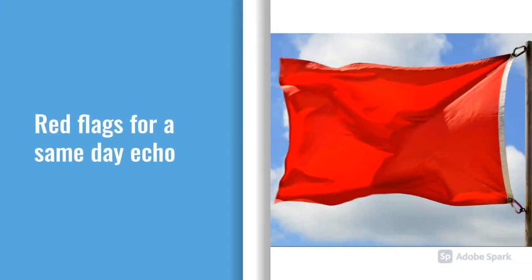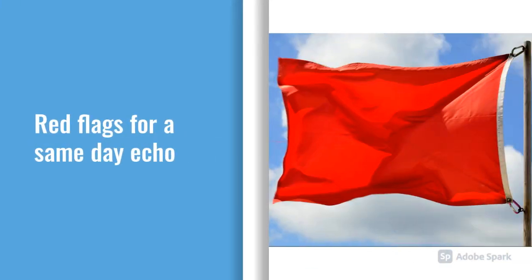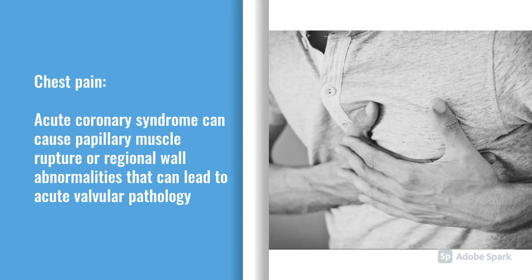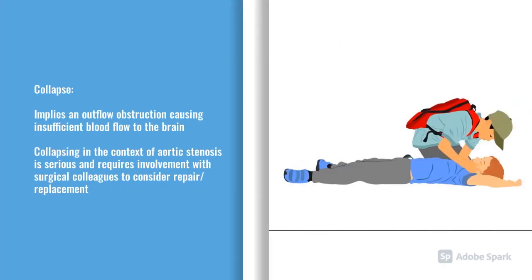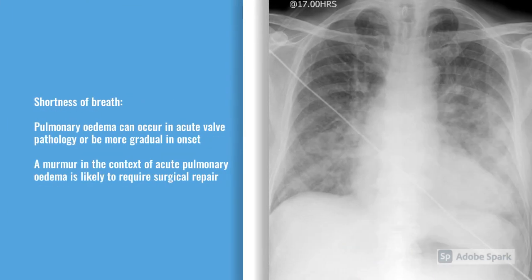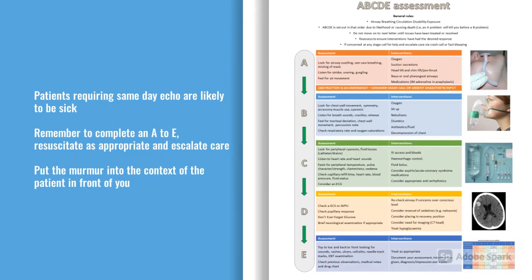Red flag criteria for a same-day echo include: chest pain in the context of a murmur — you have to think whether a large ischaemic event has caused a valvular prolapse or regurgitant valve. Collapse is always concerning, particularly aortic stenosis — if a patient is having collapses, especially on exertion, that's a big red flag. Acute pulmonary oedema or severe shortness of breath in the context of a new murmur is another red flag — for instance, flash pulmonary oedema because of mitral regurgitation.